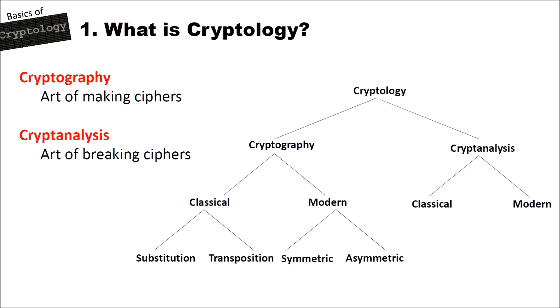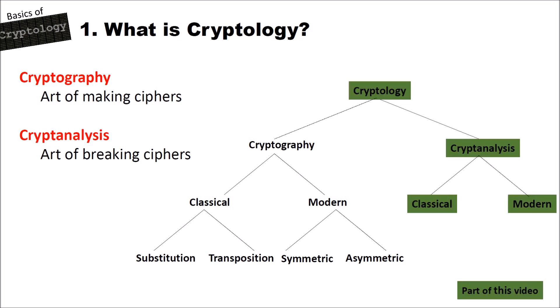As in all of my videos in the Basics of Cryptology series, I first show you the 'What is Cryptology' slide. Cryptography is the art of making ciphers and cryptanalysis is the art of breaking ciphers. In this video, I want to have a look at cryptology, cryptanalysis, modern cryptanalysis, and classical cryptanalysis. I also marked classical cryptanalysis green, since we use some ideas of classical cryptanalysis — for instance, frequency analysis — also in these modern heuristics.